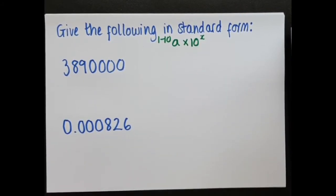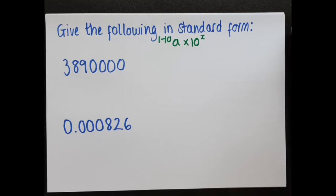I'm going to start with this top one, I want to give that in standard form. The first thing I want to do is figure out where the decimal point is currently in that number. Whenever you can't see a decimal point, it always means that it's at the end. So, that's my decimal point currently.